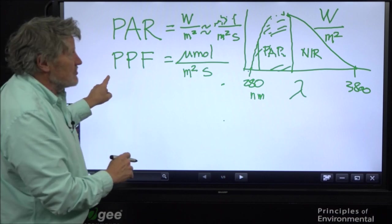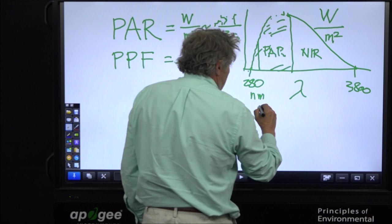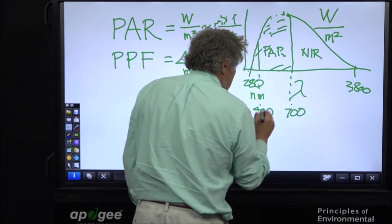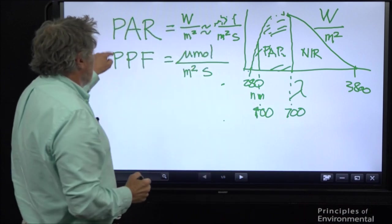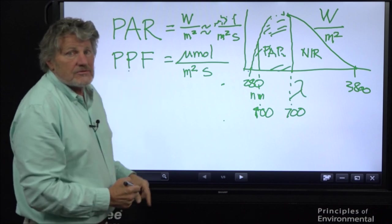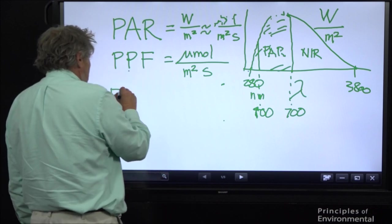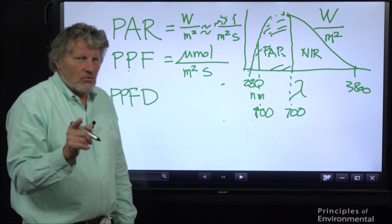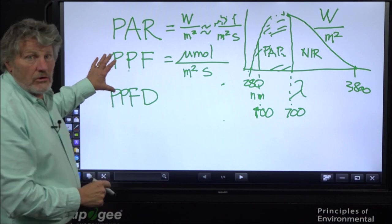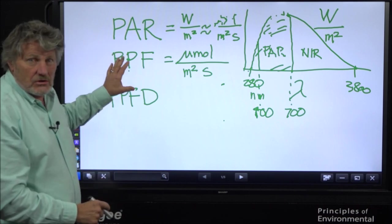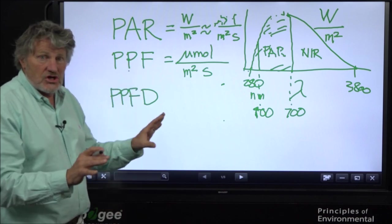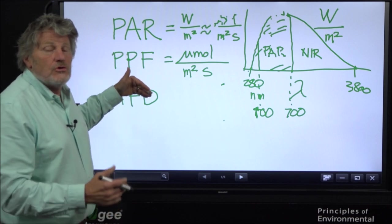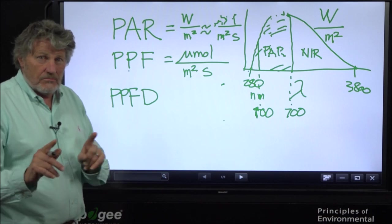But language evolves. People kept using PAR to mean micromoles per meter squared per second. So it got confusing. These terms were used interchangeably, and they are used interchangeably to this day, but we try to use a more rigorous term for just the photon flux. The P stands for photosynthetic. That means 400 to 700. If you're going to get a degree in plant science, you got to remember 400 to 700. Both of these are photosynthetic. This is a photon flux.